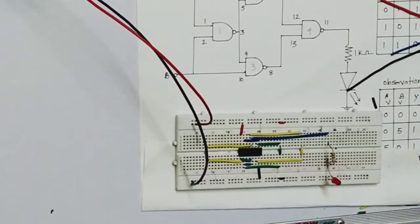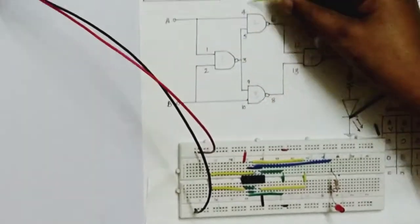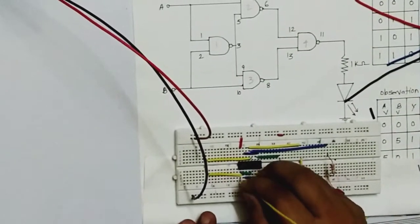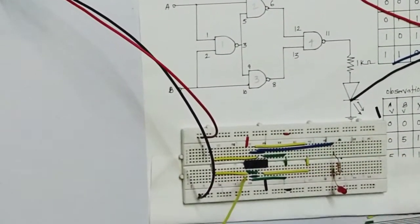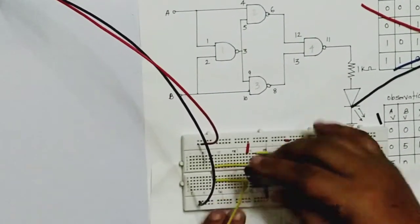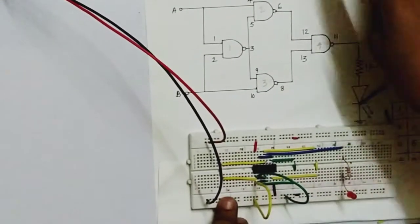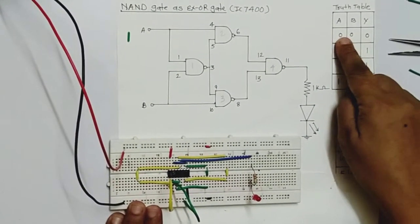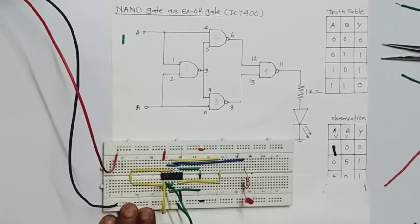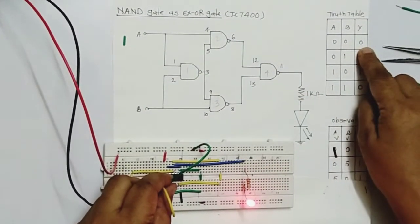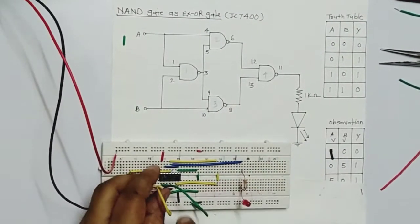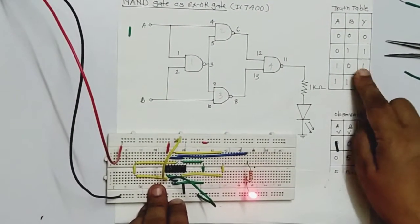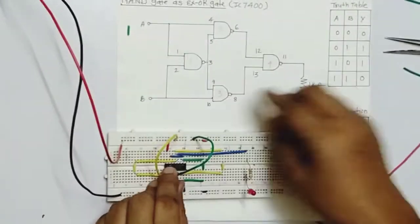We are using two inputs: pin number 1 is A and pin number 2 is B. Both are 0 and 0 — turn on the power supply. Both 0, 0: output is 0. A=0, B=1: output is 1. Interchange the inputs — A=1, B=0: output is 1. Both are 1, 1: output is 0.